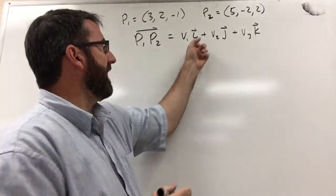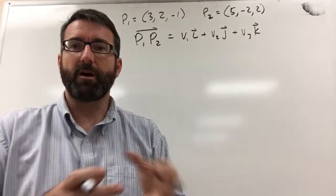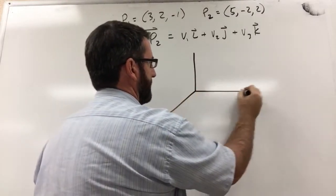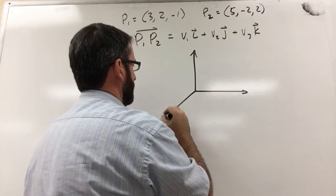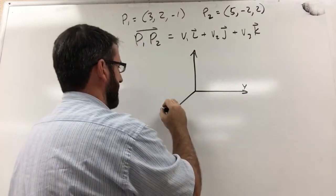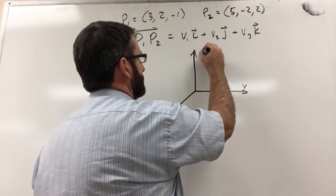So what these i, j, and k are, these are our standard unit vectors. So if we've got our three-dimensional space here, this is our y-axis, this is our x-axis, this is the z-axis.